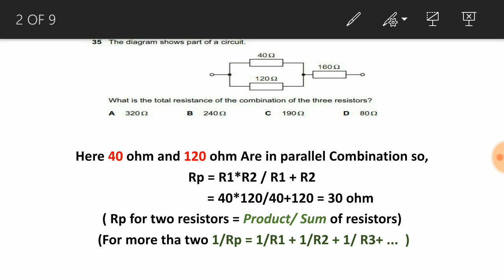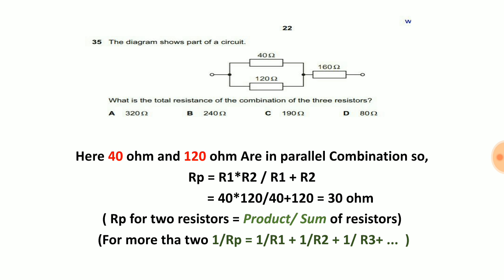This is our question. There is one circuit and in this circuit 40 and 120 ohms are in parallel combination with each other, and the whole combination is in series combination with 160 ohm.